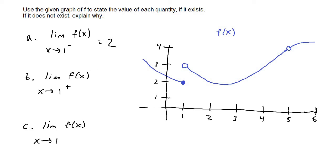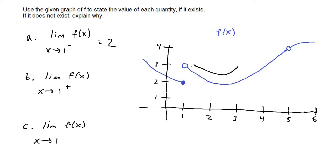For part b, we have the limit of f of x as x approaches one from the positive direction or right-hand side. Looking at the graph as f of x approaches the x value of one from the right-hand side, we approach a value of three. So the limit is three.